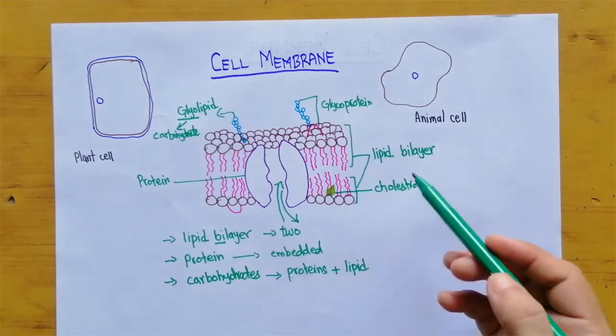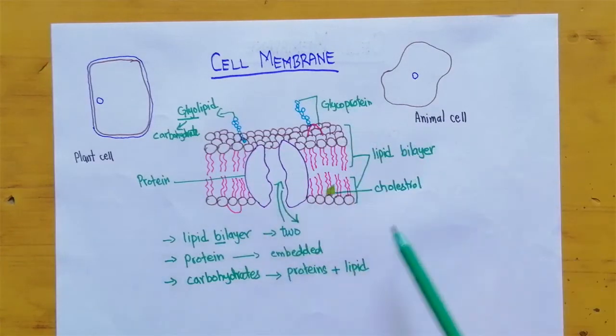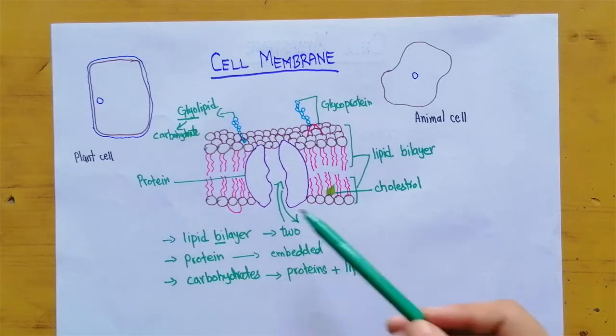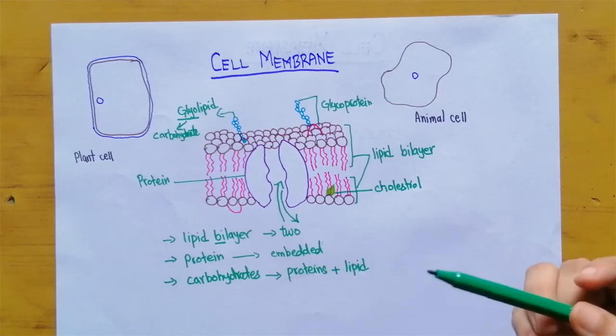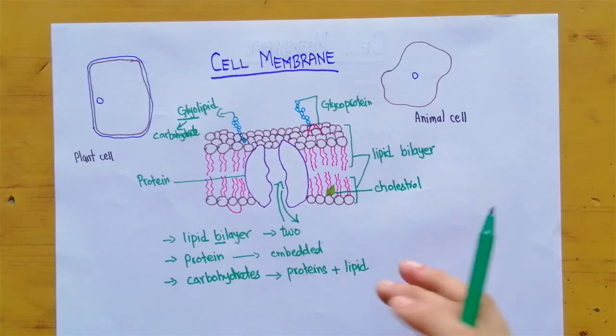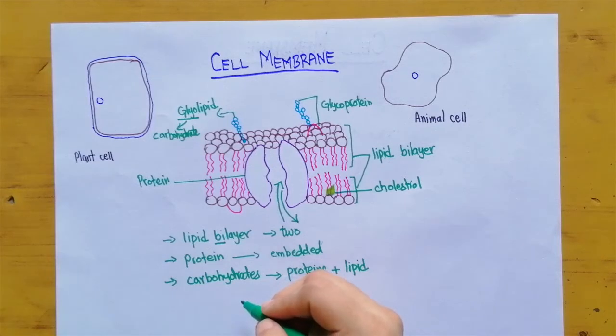When the biologist or scientists they discovered all these things they give a particular model for the cell membrane which is known as fluid mosaic model.